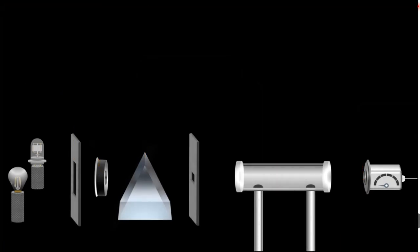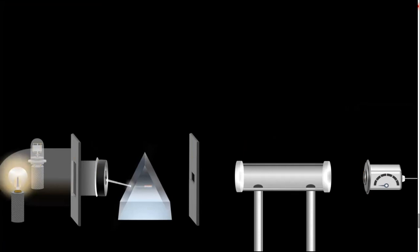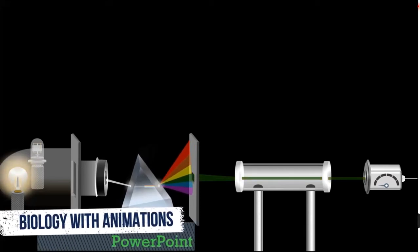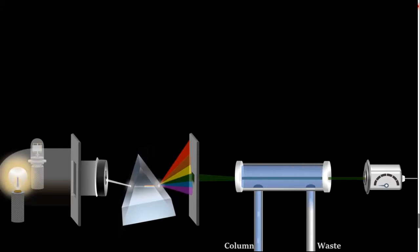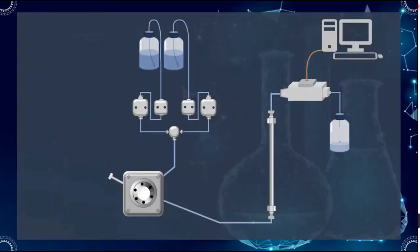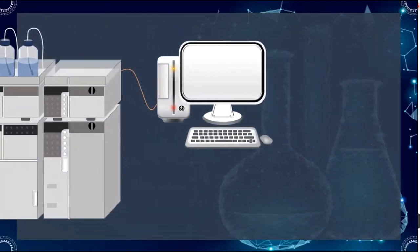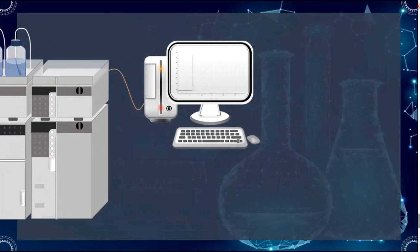Light from the lamp is directed onto the prism and dispersed according to wavelength. When measurement is performed at a specific wavelength, the angle is adjusted so that light of that wavelength shines on the flow cell. As compounds elute from the column and enter the flow cell, the bonding and non-bonding electrons absorb energy as UV or visible light. The final data is processed by computer software; the number of peaks indicates how many components are in the mixture.